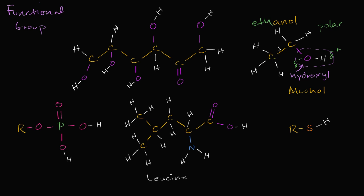A similar functional group with somewhat similar properties is the sulfhydryl group. You might ask why it's similar when it has sulfur instead of oxygen. But if you look at the periodic table, sulfur and oxygen both have six valence electrons — they both form two covalent bonds. This group is called a sulfhydryl group. Sulfur is electronegative, but less electronegative than oxygen, so it's still polar but not quite as polar as a hydroxyl group.